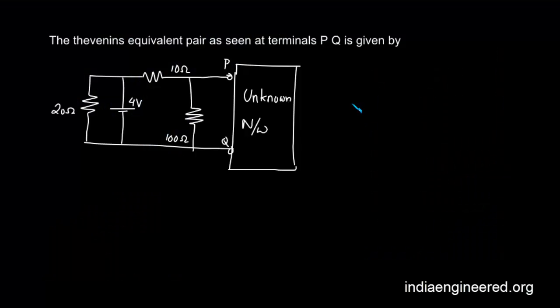This question was asked in GATE Electrical 2009 paper. We are asked to find out the Thevenin's equivalent pair as seen at terminals P Q. We need to find the Thevenin's resistance and voltage across terminals P and Q.